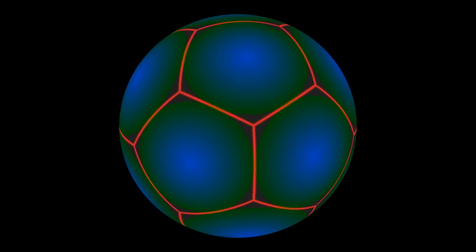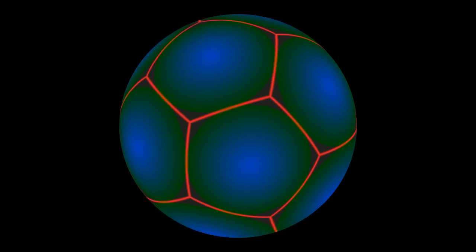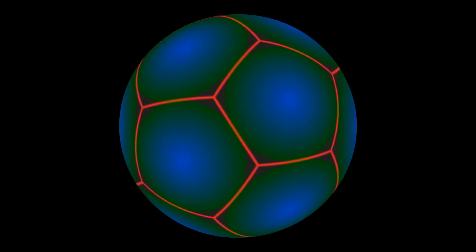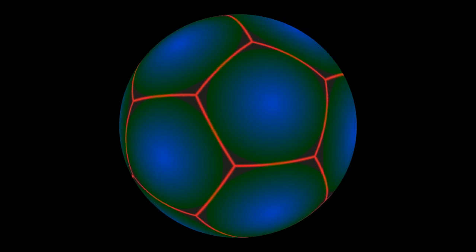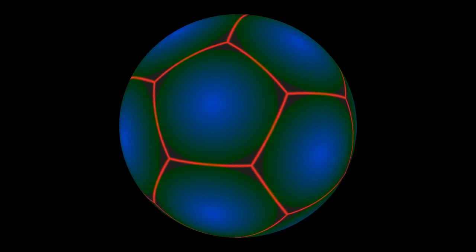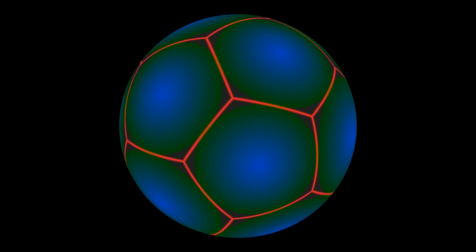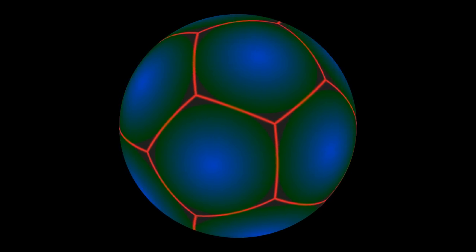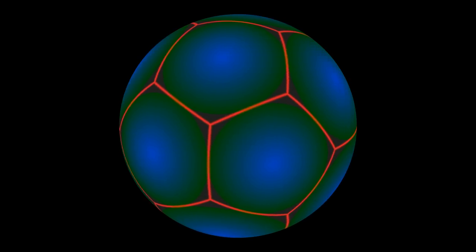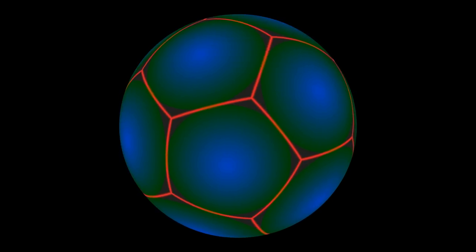If you think of a dodecahedron as a regular solid with flat sides in Euclidean 3-space, the relationship between the two is that if one inscribes the regular solid inside a sphere and then blows it out to completely fill the sphere — in other words, if one projects the edges and vertices onto the sphere from its center — then one obtains this pattern, which is a tiling of the sphere by 12 regular pentagons.